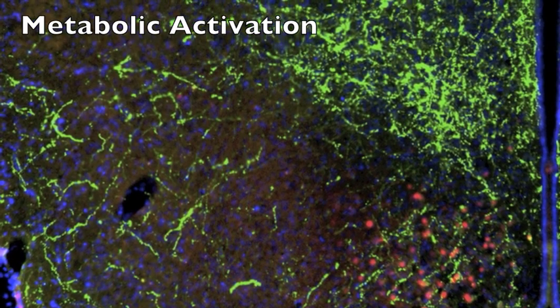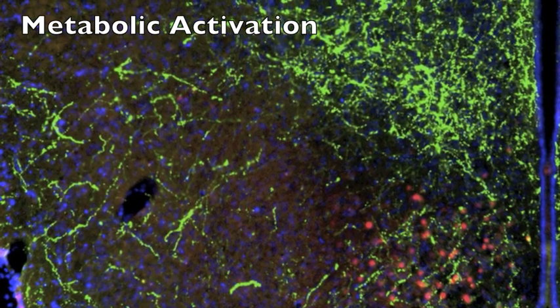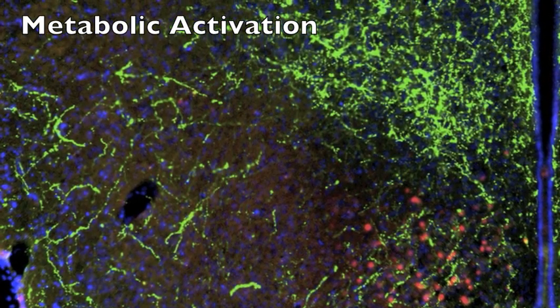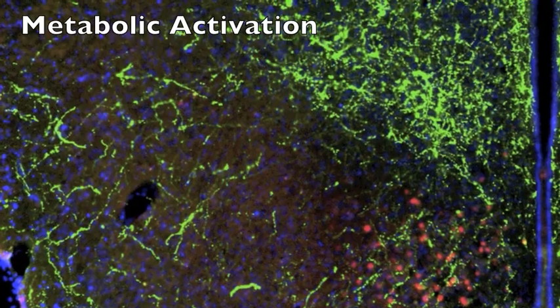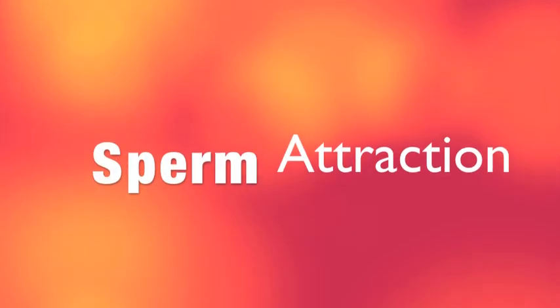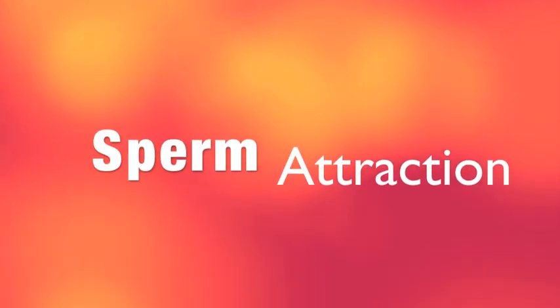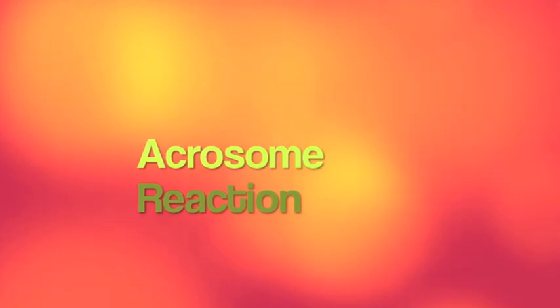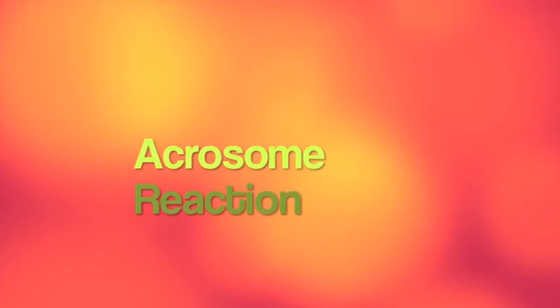Once activation has occurred, fertilization is deemed successful and the organism continues to develop. In summary, there are four main steps in fertilization: sperm attraction via the mechanisms of chemotaxis, and the acrosome reaction which results in the entrance of the sperm into the egg,